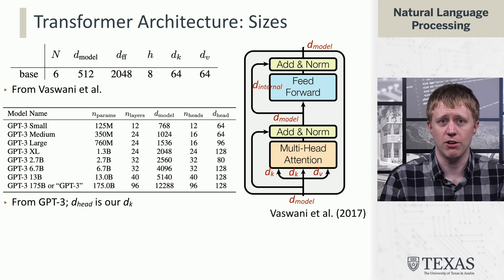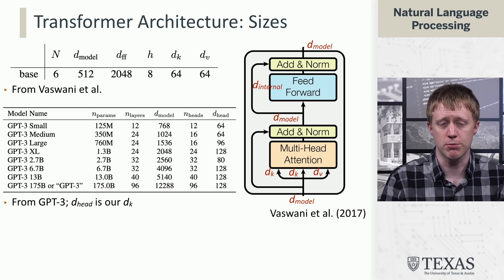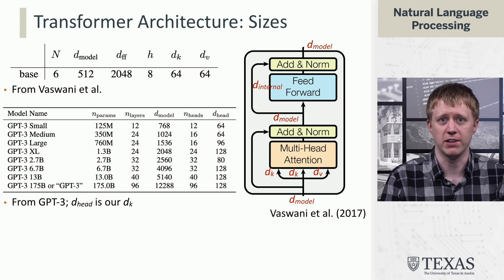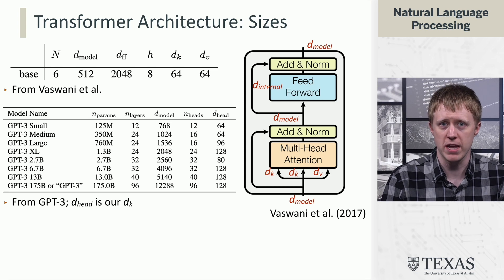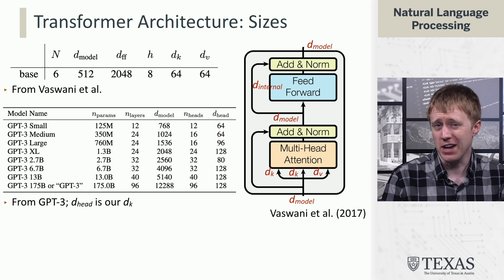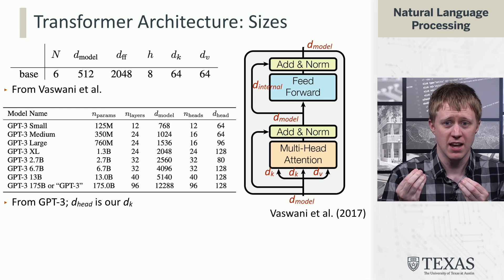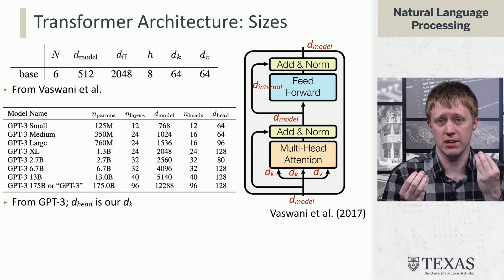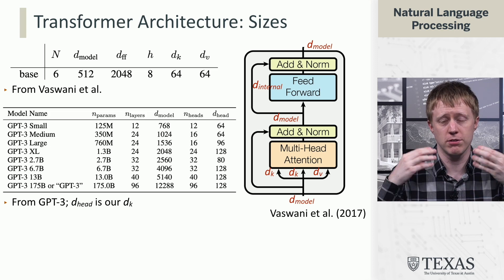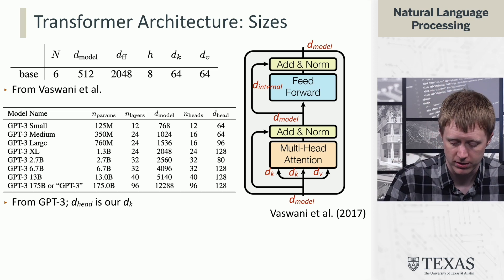Now, if we look at how these things scale, the table below is from the GPT-3 paper. We see that the D model has gotten a lot, lot bigger, up to like 12,000. And then the D head here of 128, this is what we call DK. It actually hasn't gotten that much larger, right? So the complexity of the interaction around attention is not really where most of the action's at. Most of the action is in the D model and also the D internal of the feed forward network.